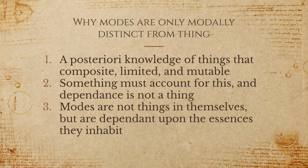Why are modes only modally distinct from a thing? We have a priori knowledge of things that are composite, limited, and mutable. Something must account for this, and dependence is not an object. Things like dependence, things like vibrational speed, are not objects in the world — they're aspects or modes of things which exist. Modes are not things in themselves, but they're dependent upon the essences they inhabit.